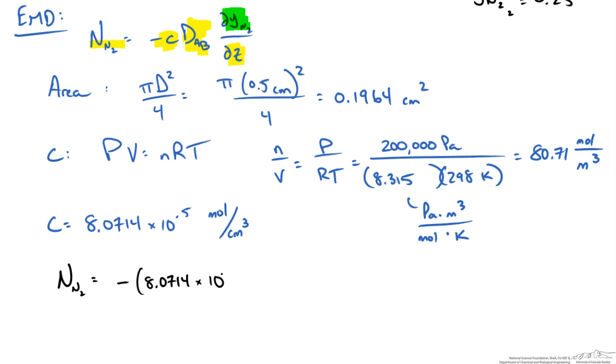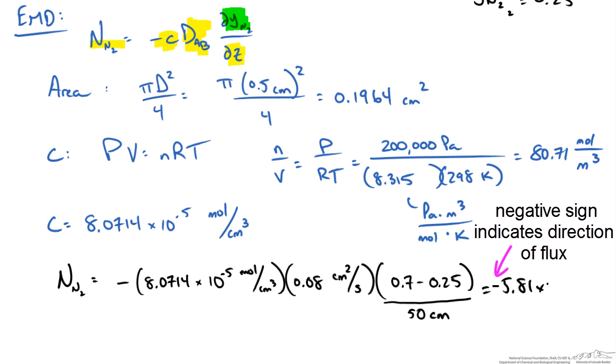I start plugging in values. Here we are looking for the mole fraction to be 0.7 on one side, 0.25 on the other. And this is all over our distance which was half a meter, or in this case 50 centimeters, to make sure our units work out. This gives us a flux equal to 5.81 times 10 to the minus 8 mole per centimeter squared second.